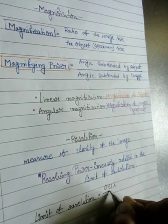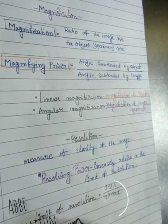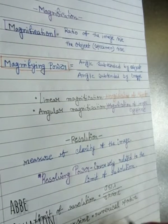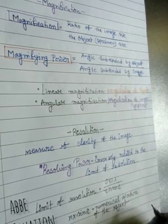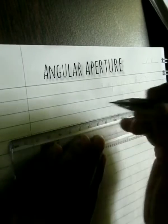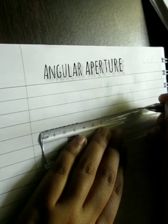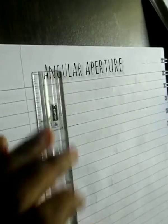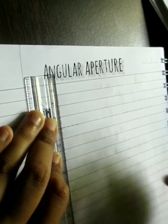There is the Abbe equation: the limit of resolution equals 0.61 lambda divided by N times sin alpha. The quantity N times sin alpha is called the numerical aperture of the objective lens, abbreviated as NA. This NA is a measure of the ability of a lens to collect light from the specimen. Lenses with a low NA collect less light than those with a high NA. For a small limit of resolution, the numerator should be as small as possible and the denominator as large as possible.